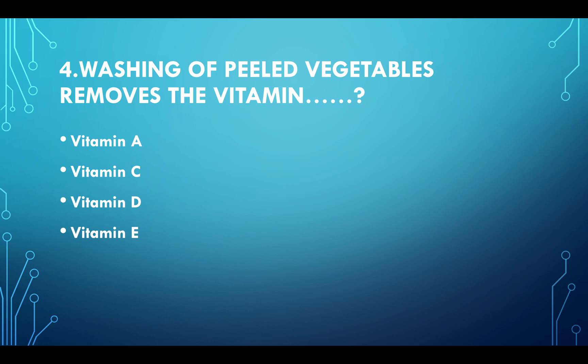Washing of peeled vegetables removes which vitamin? Option A: Vitamin A. Option B: Vitamin C. Option C: Vitamin D. Option D: Vitamin E. Answer: Vitamin C.